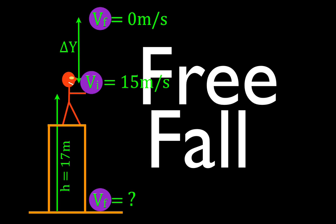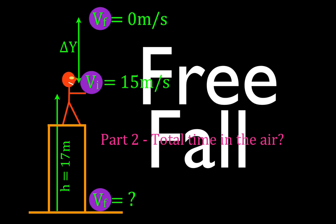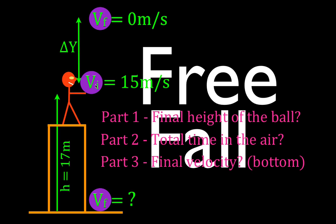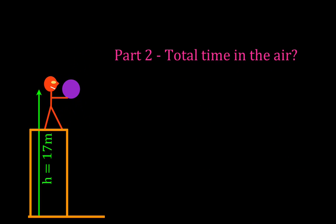In today's video we're going to go over another problem involving free-fall kinematics. This video is part two of a three-part series. In this video we're going to determine the total time it takes for an object when it is launched from a known height with a known initial velocity to go up and come straight back down to earth. In part one we determined the total height of the object, and in part three we determine the final velocity.